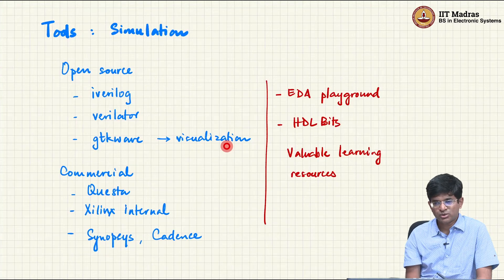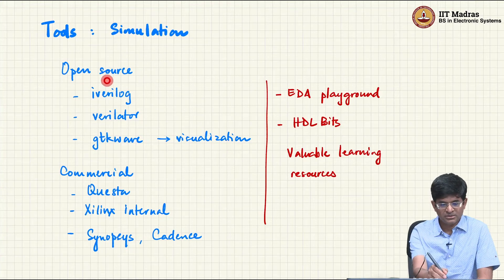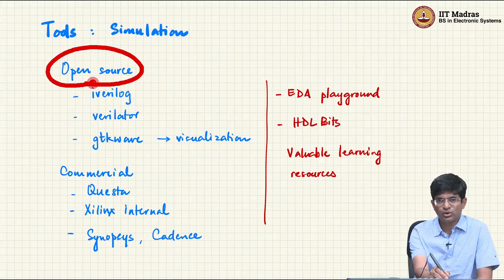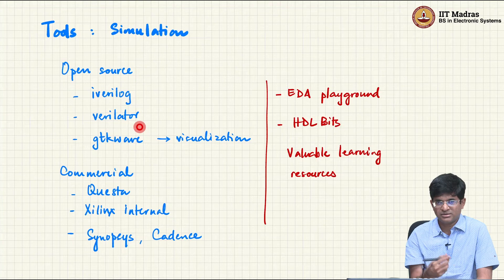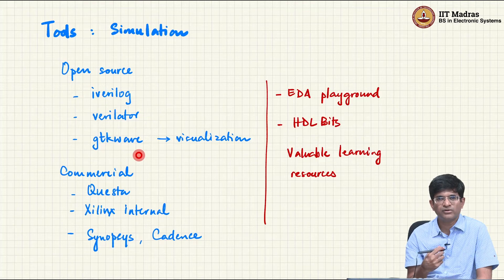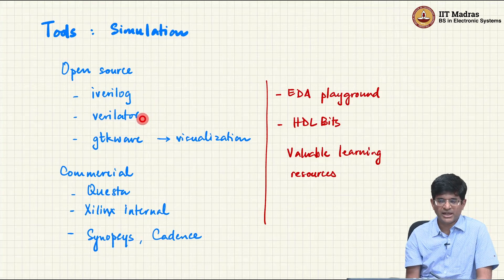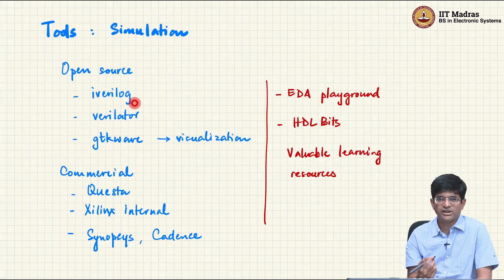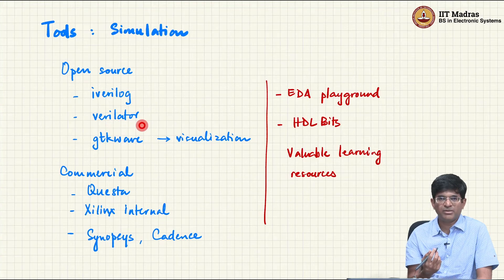There are a number of simulation tools we will encounter as we go further into the design process. It is nice to look into open-source tools — iVerilog and Verilator are good, well-known simulators. GTKWave is a tool used primarily for visualizing outputs. One of these will be the one we primarily use for evaluating assignments — most likely iVerilog. Both are well worth getting to know. Verilator in particular is potentially even faster than many commercial tools under certain restrictive conditions.